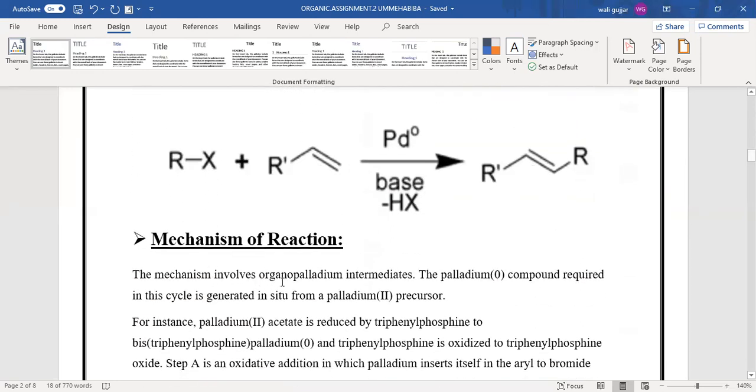The mechanism involves organopalladium intermediates. The palladium compound required in this cycle is generated from a palladium precursor. For instance, palladium acetate is reduced by triphenylphosphine to bis-triphenylphosphine palladium, and triphenylphosphine is oxidized to triphenylphosphine oxide.